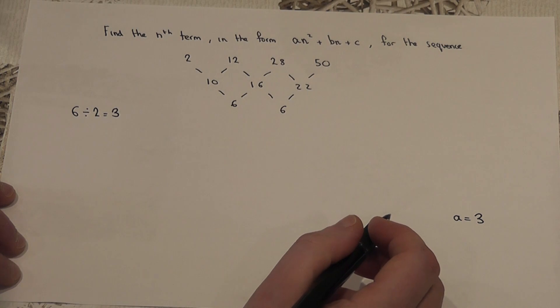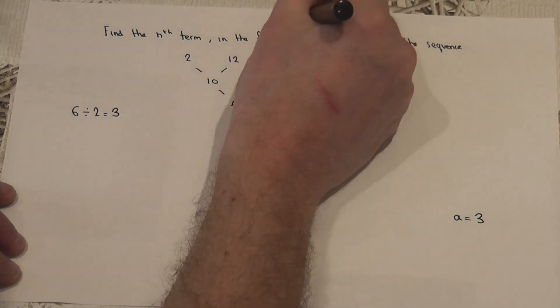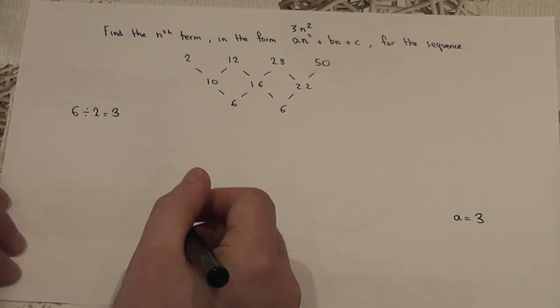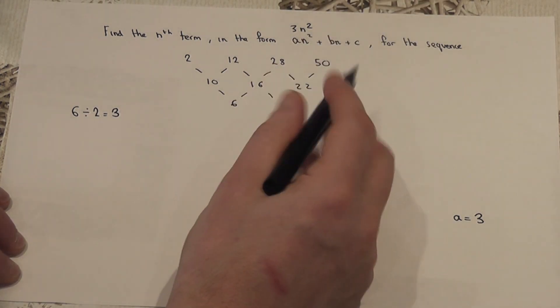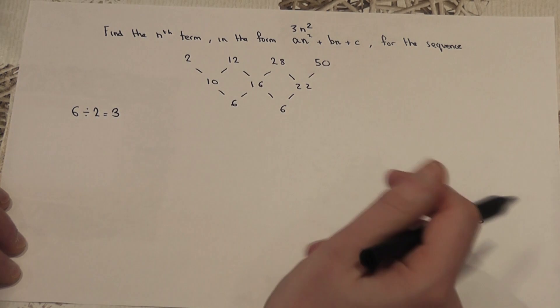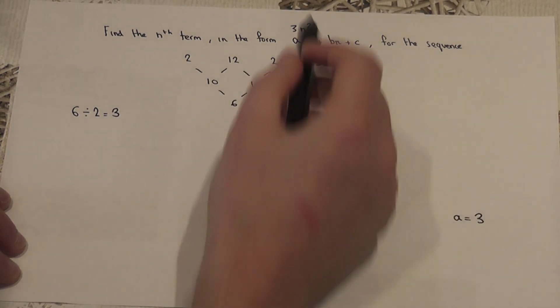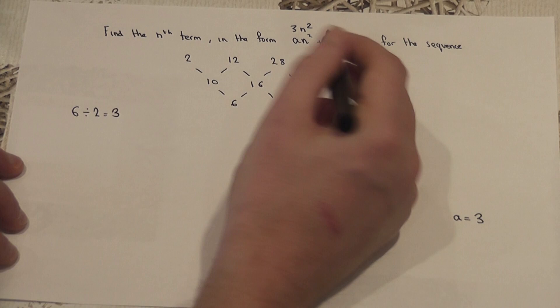So, we now know that part of the sequence is given by 3n squared. Now, to find b and c, we then go through a certain procedure. And the first bit is to find out what 3n squared is.